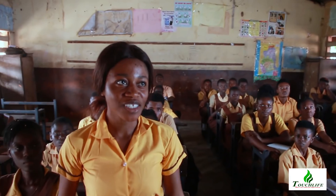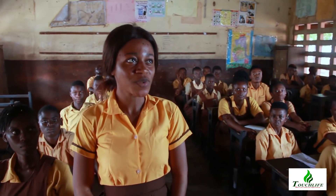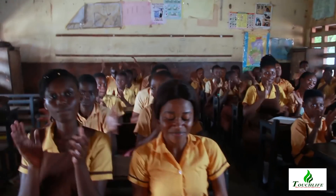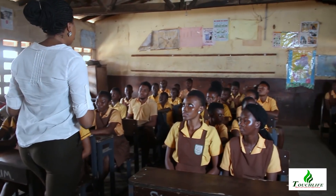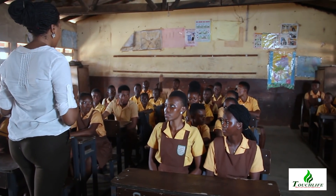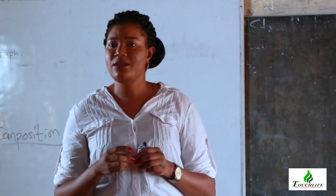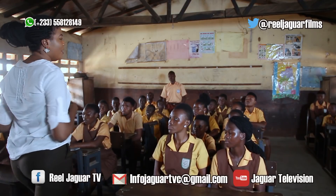Who can form a sentence with aujourd'hui? Je mange ma nourriture préférée aujourd'hui. And what's the meaning? I ate my favorite food today. Clap for her. Who else? Je suis venu à l'école à l'aise aujourd'hui. What's the meaning? I came to school on time today. Okay, clap for him.